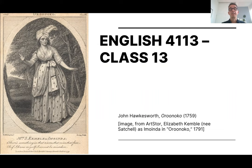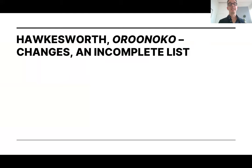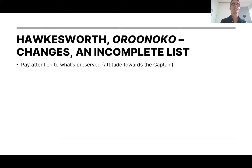So what does he do to it? I've got an incomplete list and I'm just going to talk you through some of the key changes. First, we can pay attention to what's preserved. There's not a lot left of the original novel. That's partially the blame on Southern himself, but Hawksworth could have added that back in if he liked. The attitude towards the captain is something that Hawksworth retains — Behn is very down on him and quite negative, and Hawksworth is as well. This is the person who kidnaps Oroonoko in the first place.